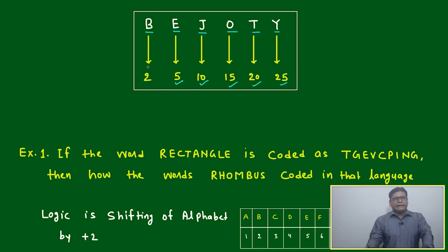Additionally, we can keep B represents 2. One more - if you are able to remember K represents 11, then BEZOTI and K equals 11, that will be sufficient.